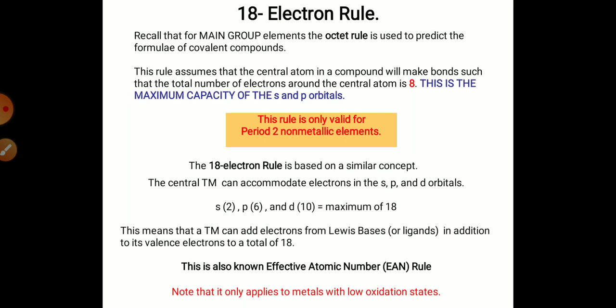The 18 Electron Rule is based on a similar concept. In this rule, the central transition metal can accommodate electrons in s, p, and d orbitals. In s orbital, it can occupy 2; in p orbital, 6; and the d orbital occupies 10 electrons. So maximum 18 electrons can be occupied by the transition metal atom.